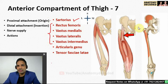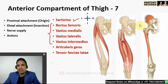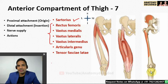The proximal attachment of rectus femoris is by two heads of origin. The straight head arises from the anterior inferior iliac spine, and the reflected head arises from an area above the acetabulum. The distal attachment of all four quadriceps muscles is learned together — their primary insertion is on the patella, and from there the ligamentum patellae extends to the tibial tuberosity.